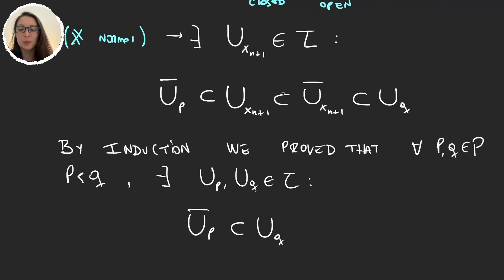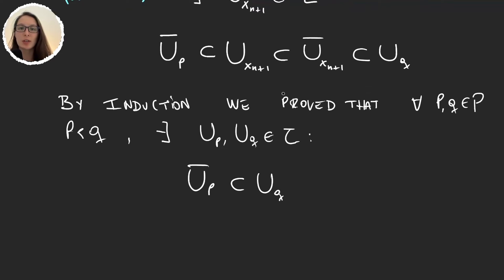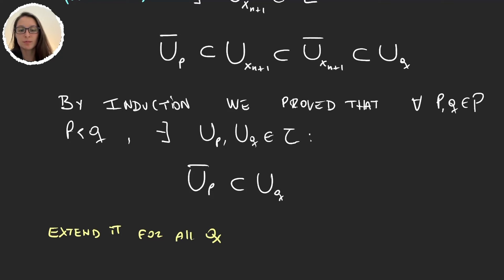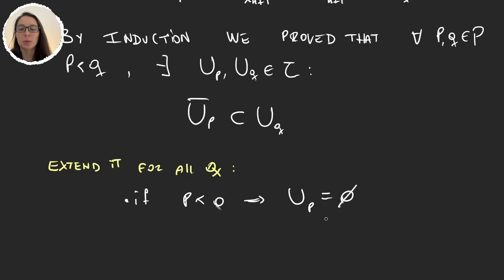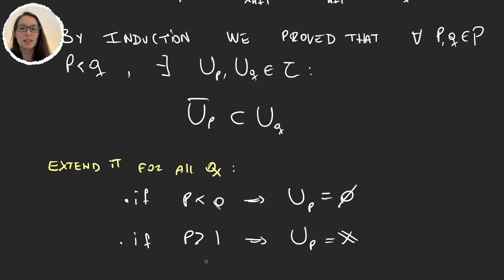Now we extend this to all rational numbers, not just those in [0,1]. If p is a rational number smaller than 0, we define U_p to be the empty set — obviously contained in any other set. If p is greater than 1, we define U_p to be the entire space, which will contain any other U_q.